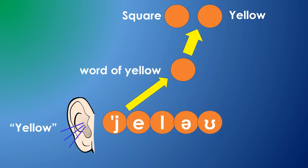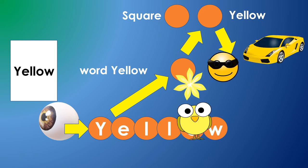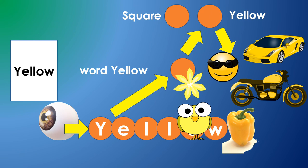Working the other direction, if you hear yellow spoken, the word yellow and abstract yellow neurons would fire. Likewise, because you know the spelling and can recognize letters, you could also read the word yellow. Either way, when the abstract yellow neuron fires, yellow things spring to mind.